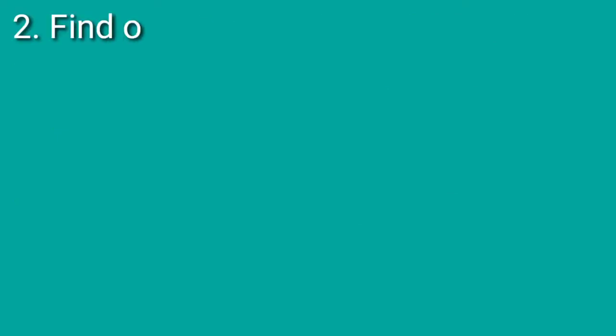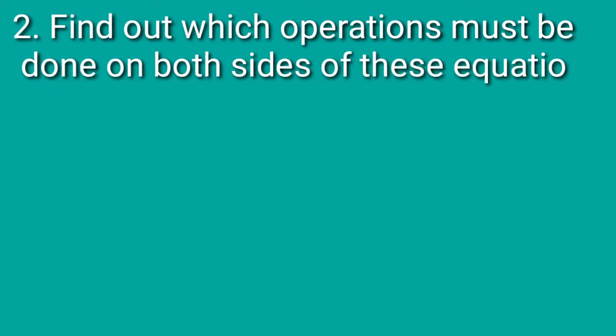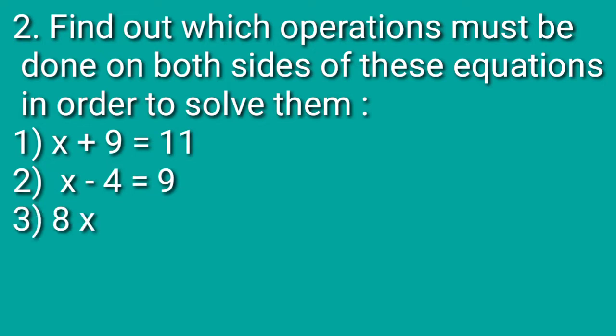Let us see question number 2. Find out which operation must be done on both sides of these equations in order to solve them — that is, to find out the value of the letter. The equations are: x plus 9 is equal to 11; x minus 4 is equal to 9; 8x is equal to 24; and x upon 6 is equal to 3.